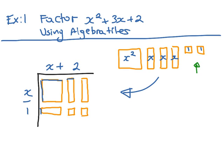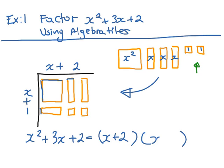So it's x plus 1. So that means the factors of x squared plus 3x, the area of it, is the multiplication between, and we're going to put them in brackets, x plus 2 and x plus 1.